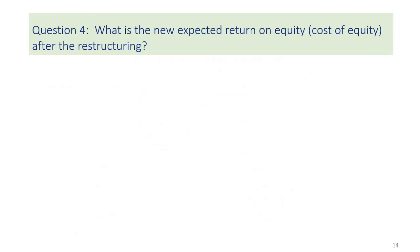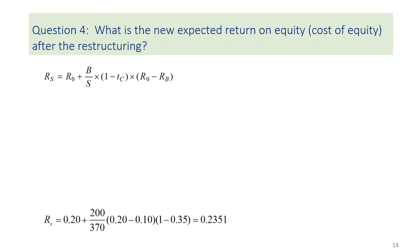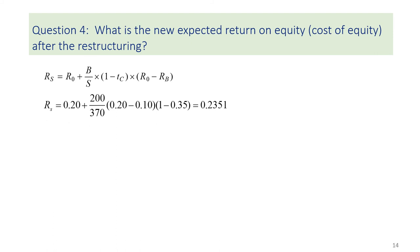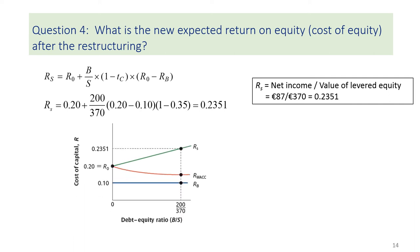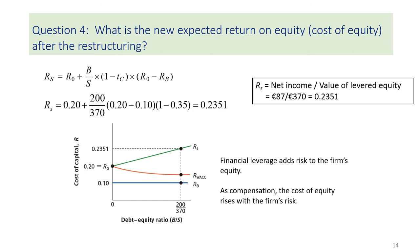Question 4: What is the new expected return on equity, or cost of equity, after the restructuring? There are two ways to calculate. I can use the MM Proposition 2 formula to calculate the cost of equity directly. Alternatively, I can reconcile from the income statement of the levered firm — the cost of equity is the return on equity, calculated as net income divided by the value of levered equity. The upward-sloping green line in the figure represents the cost of equity. Financial leverage adds risk to the firm's equity, so as compensation, the cost of equity rises with the firm's risk.